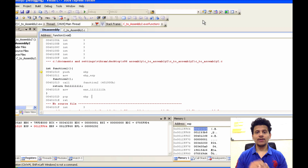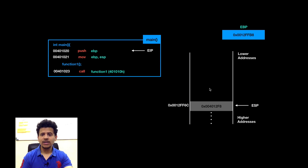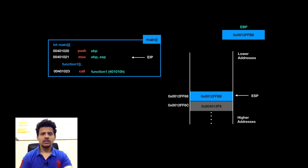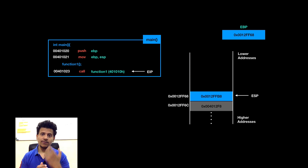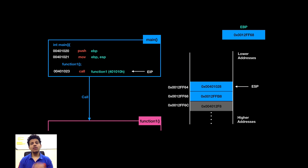We will look at the same thing in animation format for better understanding. We are starting execution from main. EIP is pointing at push EBP. That means the value from EBP, that is 0x0012FFB8, will get pushed onto the stack. Let's execute that instruction. The next instruction is move ESP into EBP, so the value pointed by ESP will move into EBP. Now in the C program, main is calling function 1. EIP is pointing at call function 1. The next instruction's address will be pushed onto the stack, so 0x00401028 will get pushed onto the stack, and after that, control will be passed to function 1.